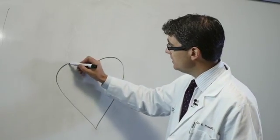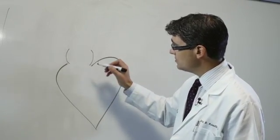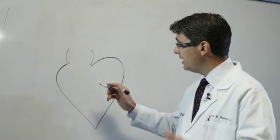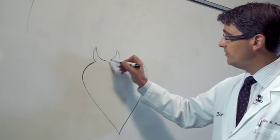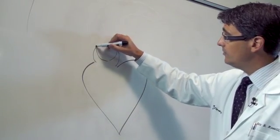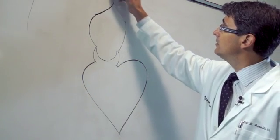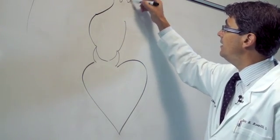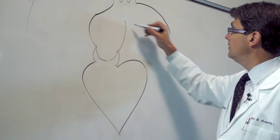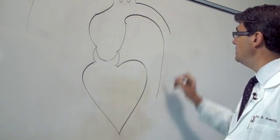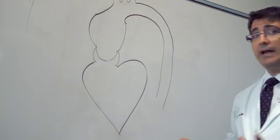So what we're talking about is this first section of the aorta called the ascending aorta, which is right above or around where the valve sits. And it can be enlarged. And depending on how large it is sort of determines how dangerous that aneurysm is.